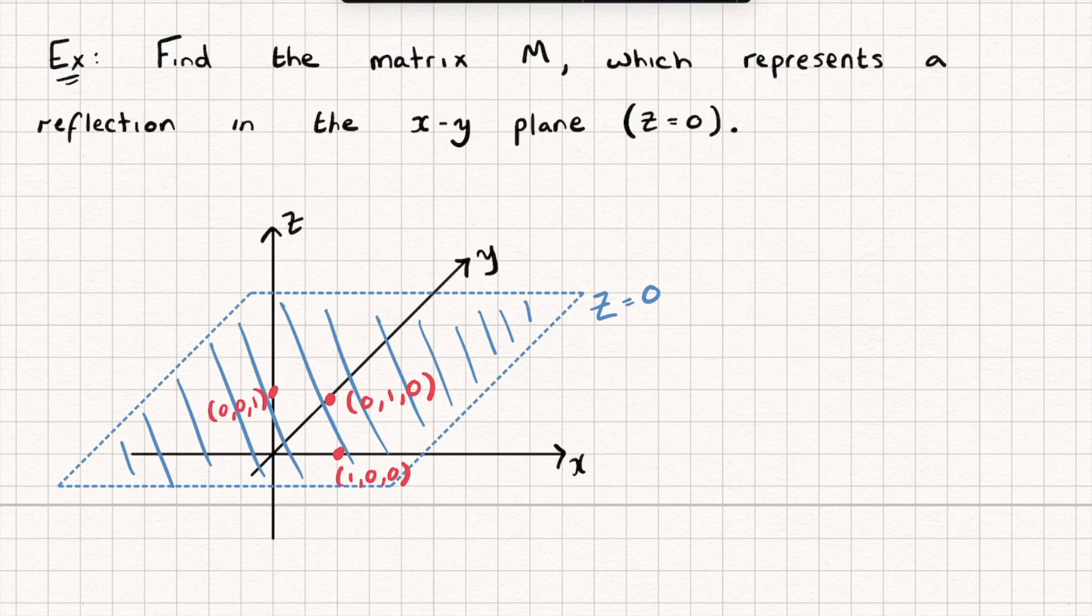Well the points (1,0,0) and (0,1,0) are actually on the plane. So they're going to be invariant under the transformation. They're not actually going to move, they're going to stay fixed. But the point (0,0,1), well that's on the Z axis. That's going to be flipped in the plane and it's going to end up down here somewhere with the coordinates (0,0,-1).